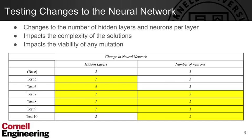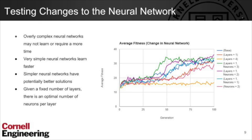Instead of changing the parameters of the genetic algorithm, we also wanted to see what happens when we change the structure of the neural network itself — like the number of hidden layers and the number of neurons per layer. As you can see from the plots, the top performers are the less complex neural nets. We conclude that overly complex neural networks may not learn, or require more time to learn the same thing. Very simple neural networks learn faster and potentially lead to better results. And given a fixed number of layers, there is an optimal number of neurons — going above or below that reduces performance.